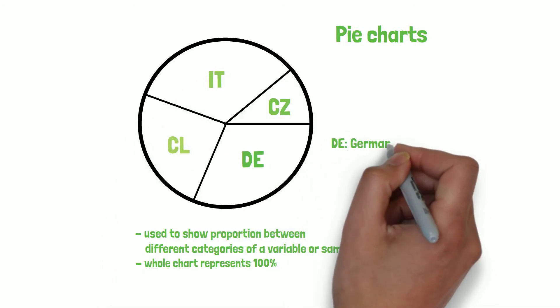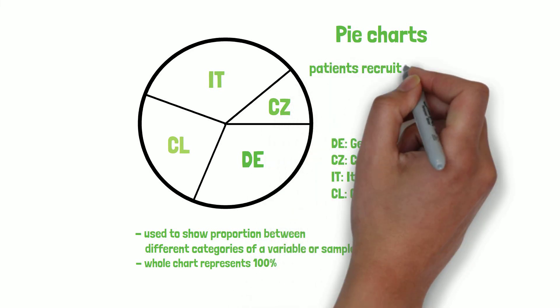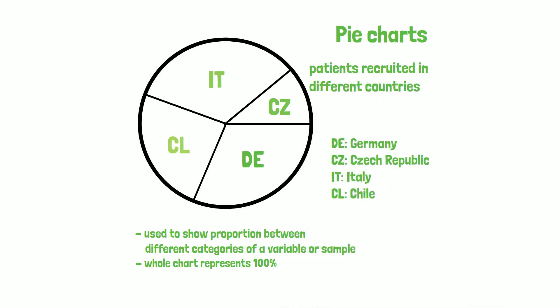For example, patients recruited in different countries. So pie charts are basically just another way to present frequencies. They are frequently used, but less intuitive, since it is harder to compare areas in a circle for the human brain.